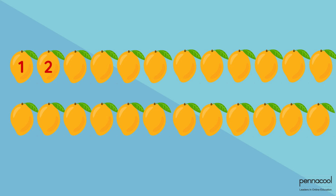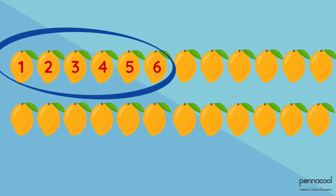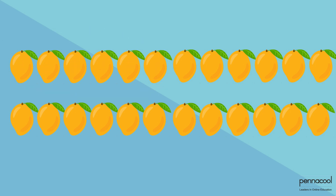1, 2, 3, 4, 5, 6. Great! But now we still have mangoes left and can get more groups of 6, so let's do that.